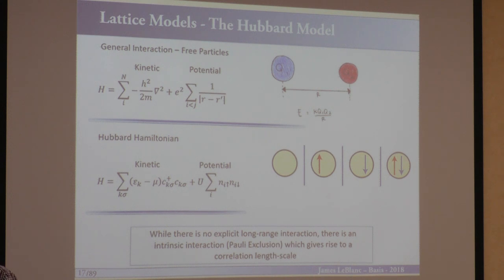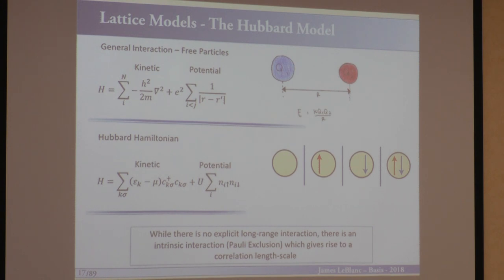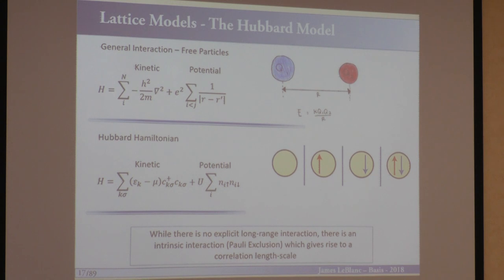This is interesting because it's not obvious there should really be any connection between these two problems. In one case you have a Coulomb interaction with some long-range interaction — so there must be long-range correlations in the system — and you've replaced it with an interaction that's completely local. The trick is that there's some hidden physics which never really appears in your Hamiltonian, and that has to do with Pauli exclusion. There's an implicit long-range interaction that comes about just due to Pauli exclusion. Even within a local interaction, this gives rise to finite correlation lengths, or finite interaction length scales.